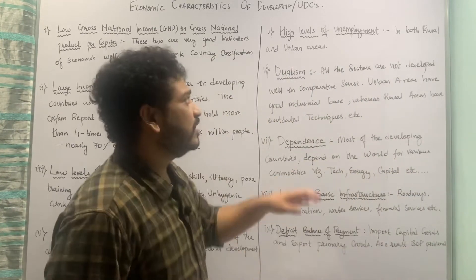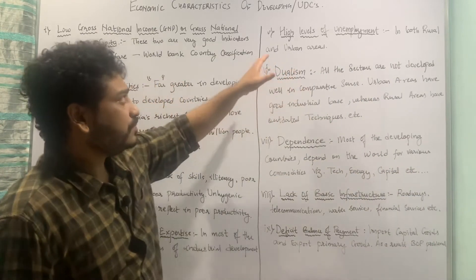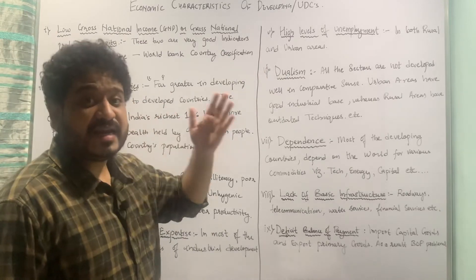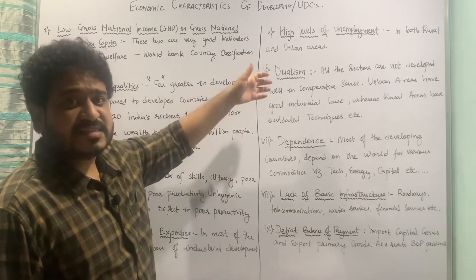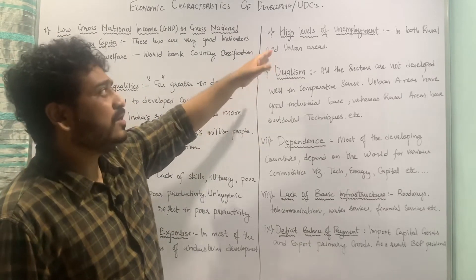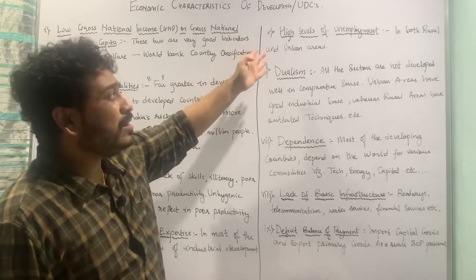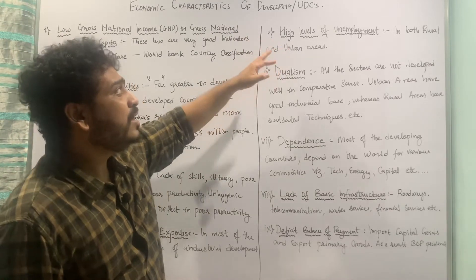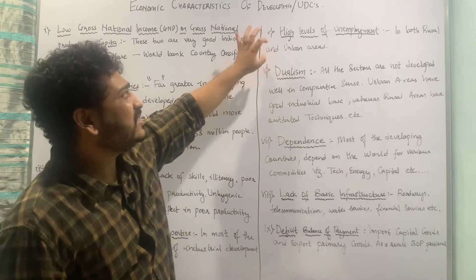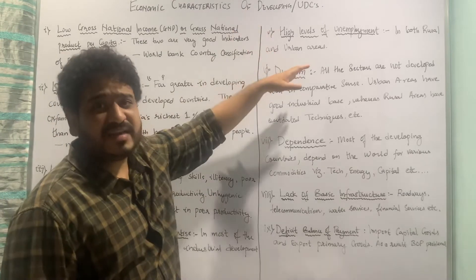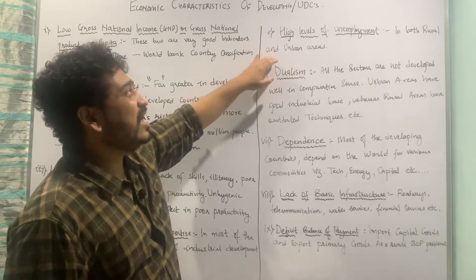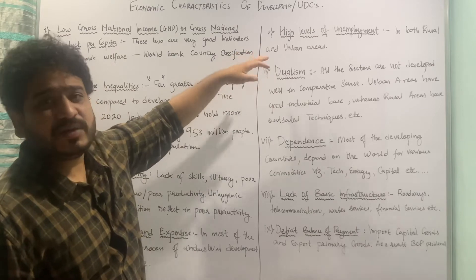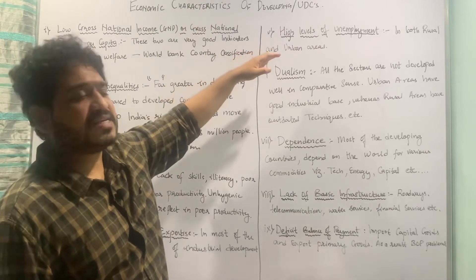Let us now move to the next point: high levels of unemployment. In the general characteristics, I talked about unemployment as well as disguised unemployment as a problem. You will find this unemployment in both rural areas as well as urban areas — that is again a problem associated with developing countries and a characteristic of the same.